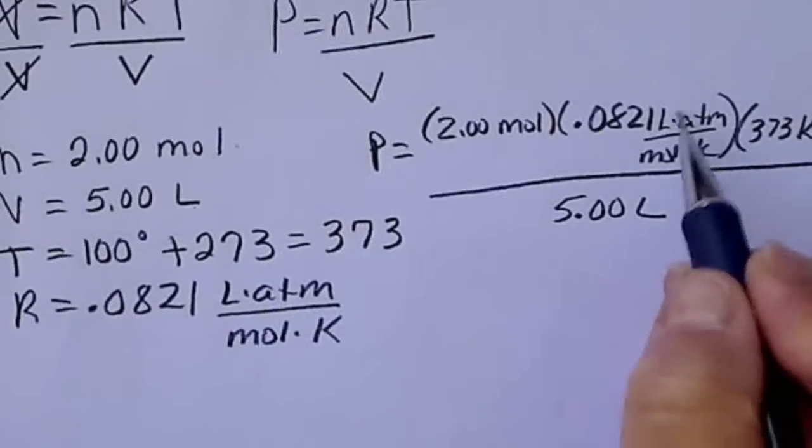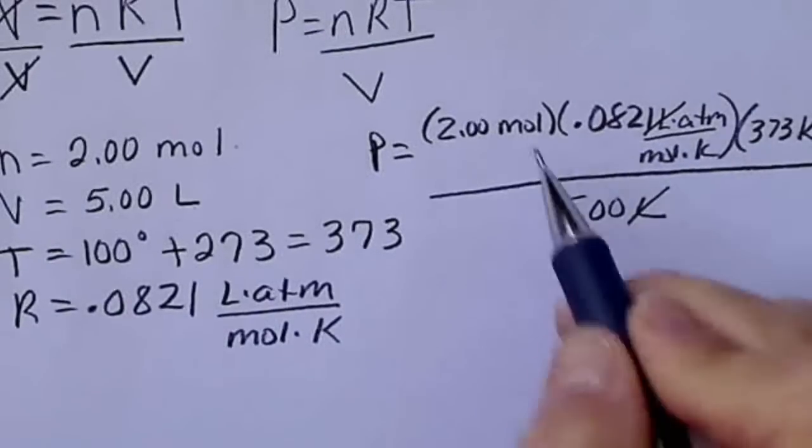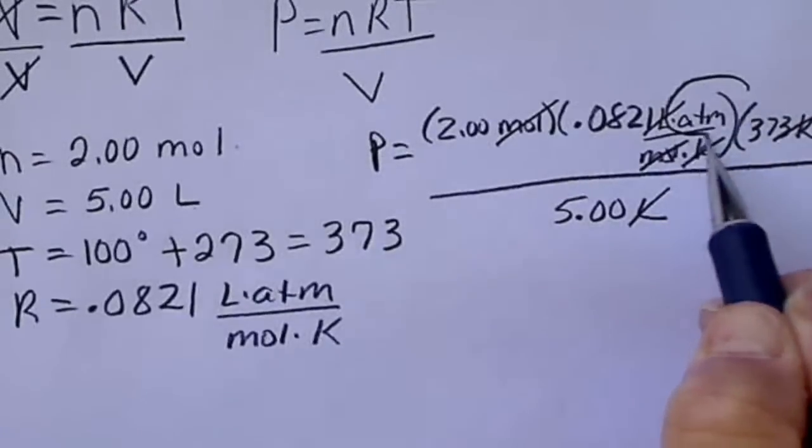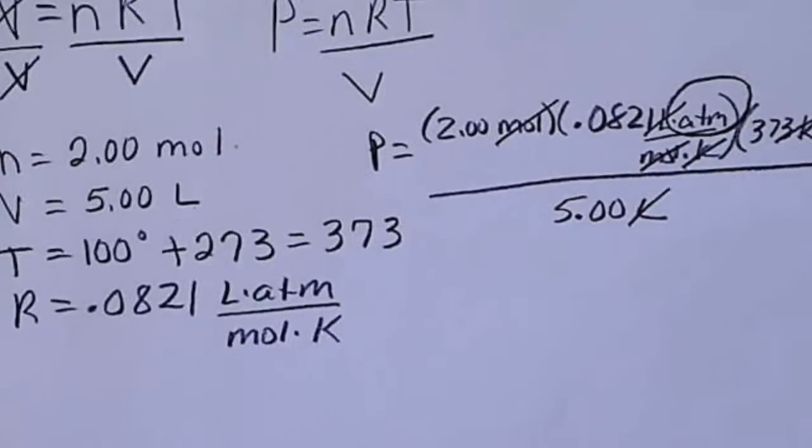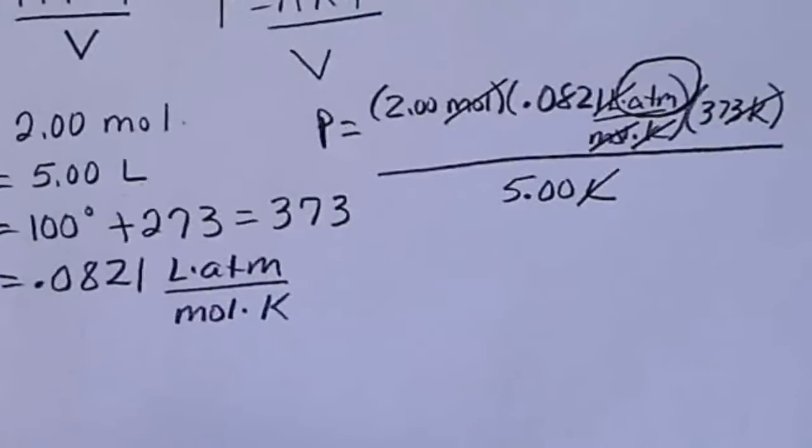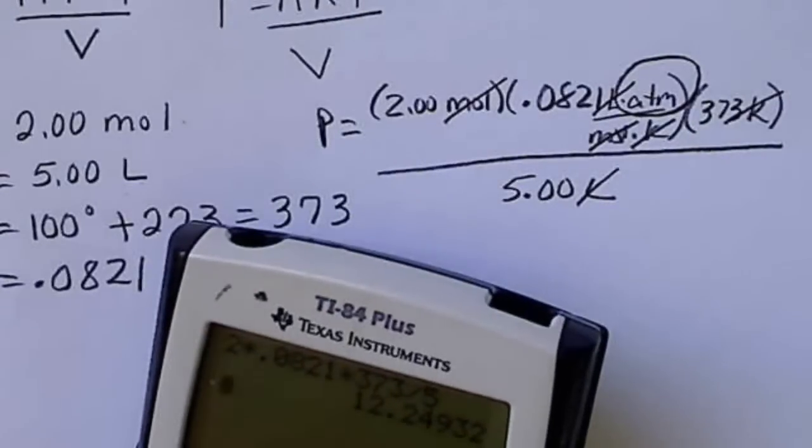And again, that liter cancels that liter. This mole cancels that mole. That Kelvin cancels that Kelvin. So our pressure is going to be in atmospheres. So if we take 2 and multiply that by 0.0821 times 373 and divide by 5, we're going to get, I think I'm off by 1.